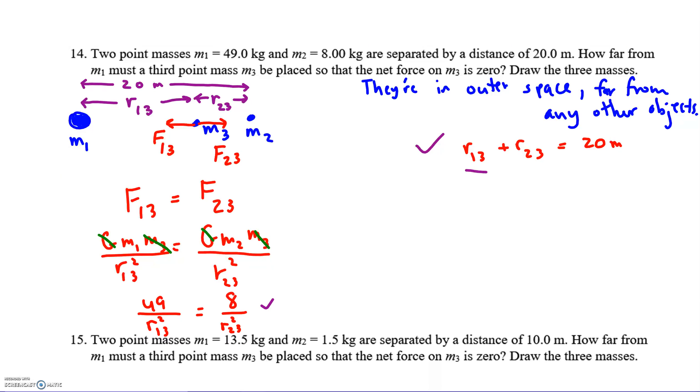We're trying to find how far M3 should be placed from M1. So we want to know the distance R13. That's really our unknown. This distance we said was 20. My unknown is R13. So I need to plug something in for R23 to make it go away. To figure out what I should plug in, let me isolate R23 in this equation.